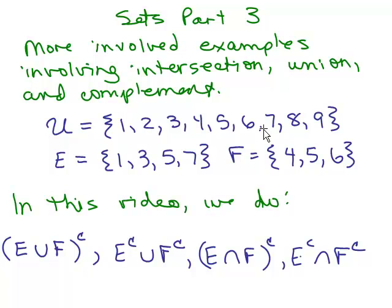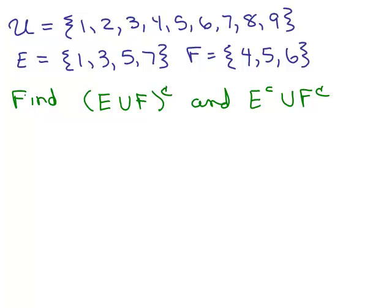For this universal set and these two subsets E and F, we'll do these four problems in this video. Let's take this universal set. So the universe is the numbers one through nine and we have two subsets I've created. One is E containing 1, 3, 5, and 7 and the other is F containing 4, 5, and 6.